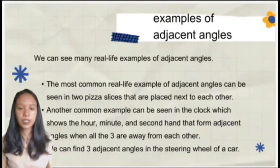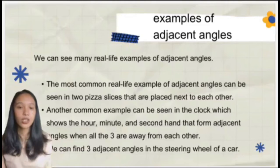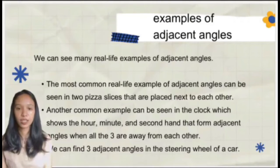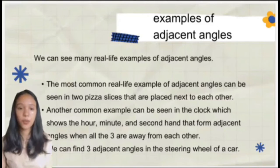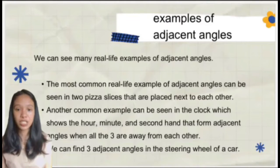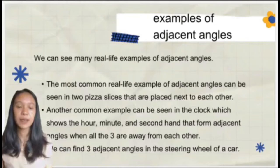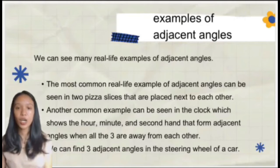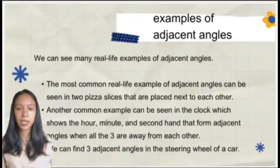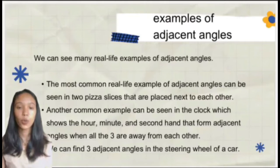The examples of adjacent angles. We can see many real-life examples of adjacent angles. First, the most common real-life example can be seen in two pizza slices placed next to each other. Second, another common example can be seen in a clock, which shows the hour, minute, and second hand that form adjacent angles when all three are away from each other.